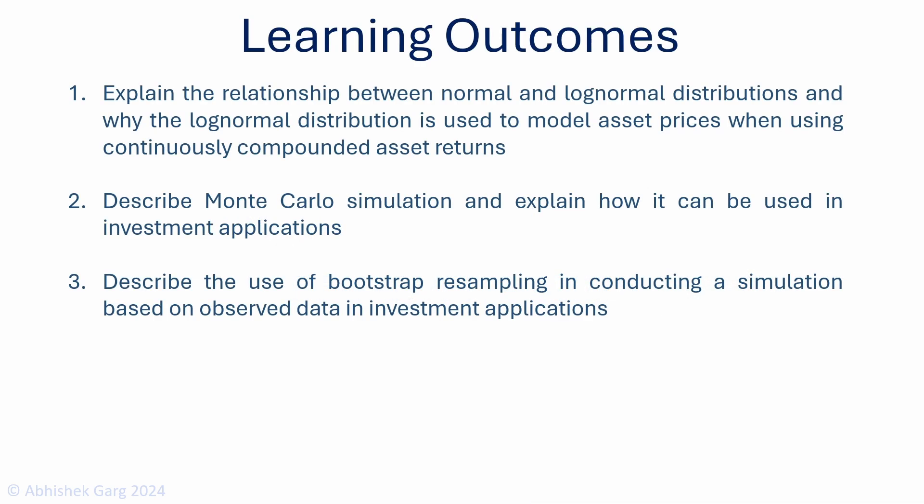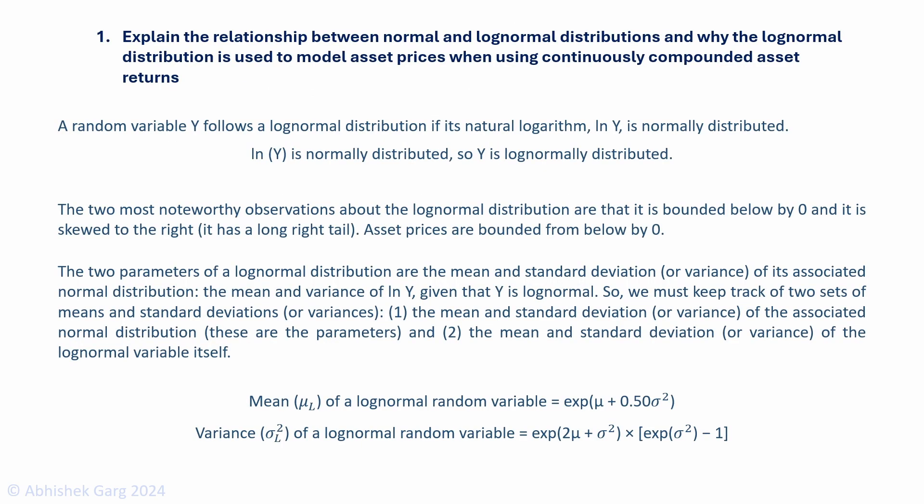There are three learning outcome statements in this module. We'll go through them one by one. The first is: explain the relationship between normal and log normal distributions and why the log normal distribution is used to model asset prices when using continuously compounded asset returns.